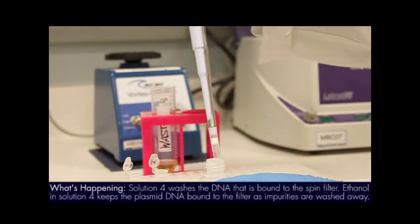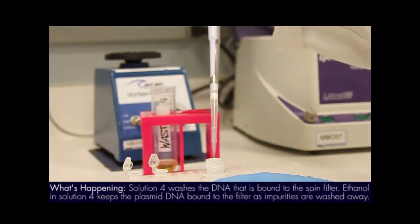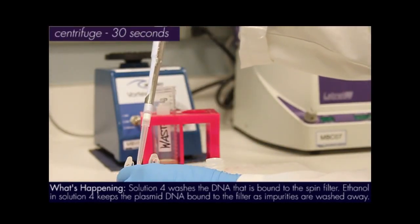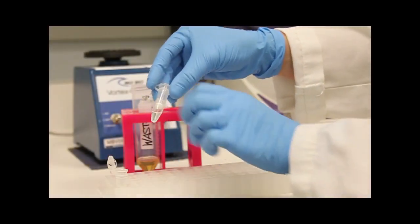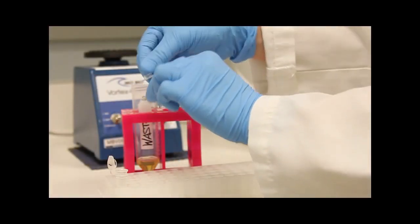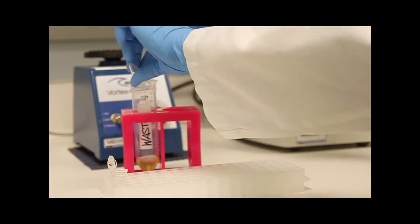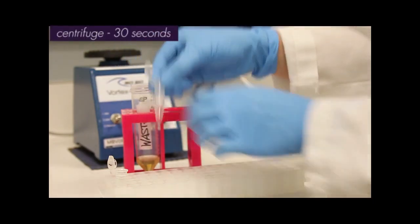Now we will add solution 4 to the spin filter to wash the membrane and centrifuge at 16,000 times G for 30 seconds. Discard flow through liquid from the 2 mil collection tube and centrifuge again for 30 seconds to dry the membrane.